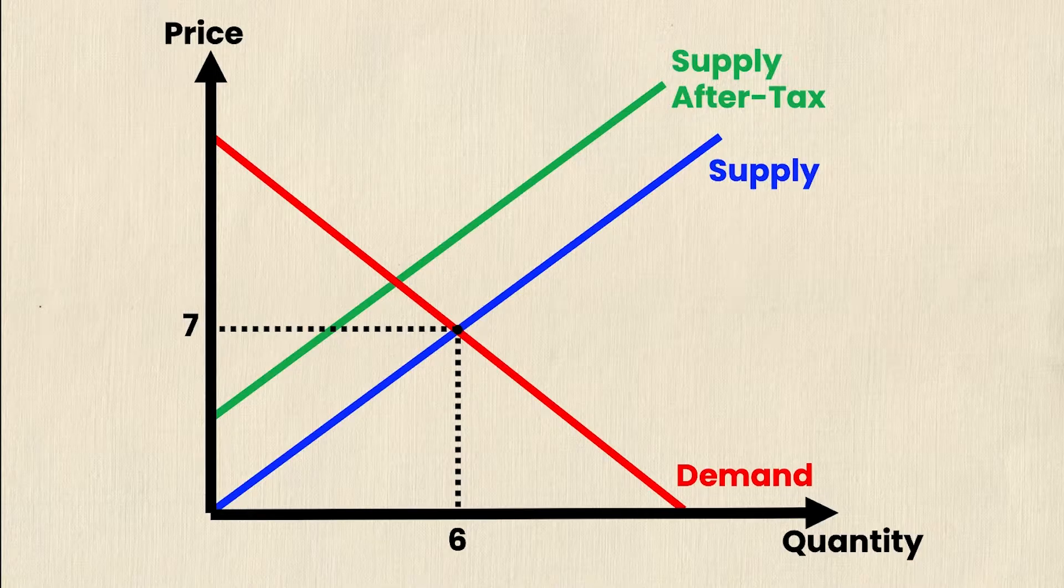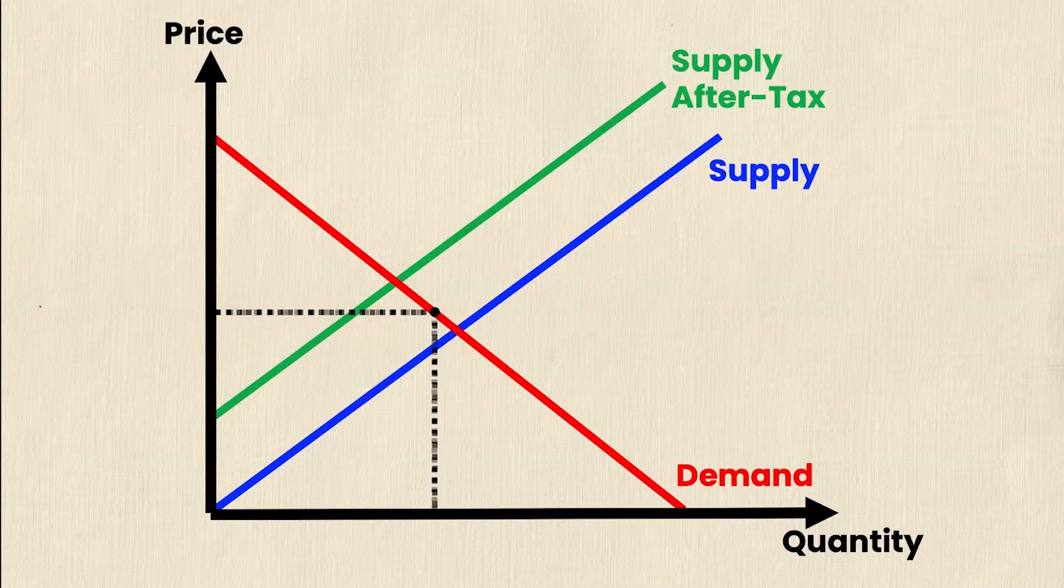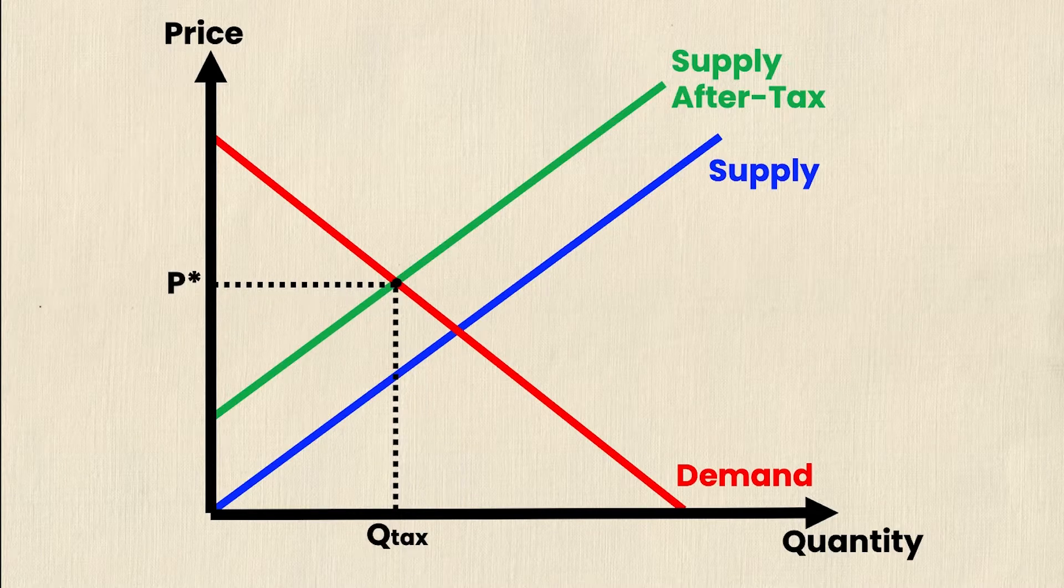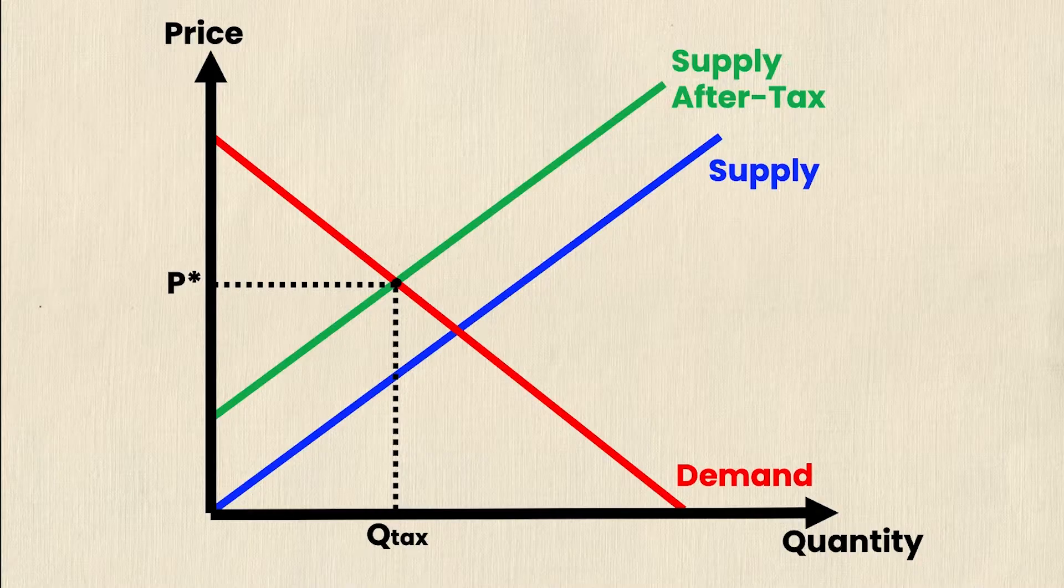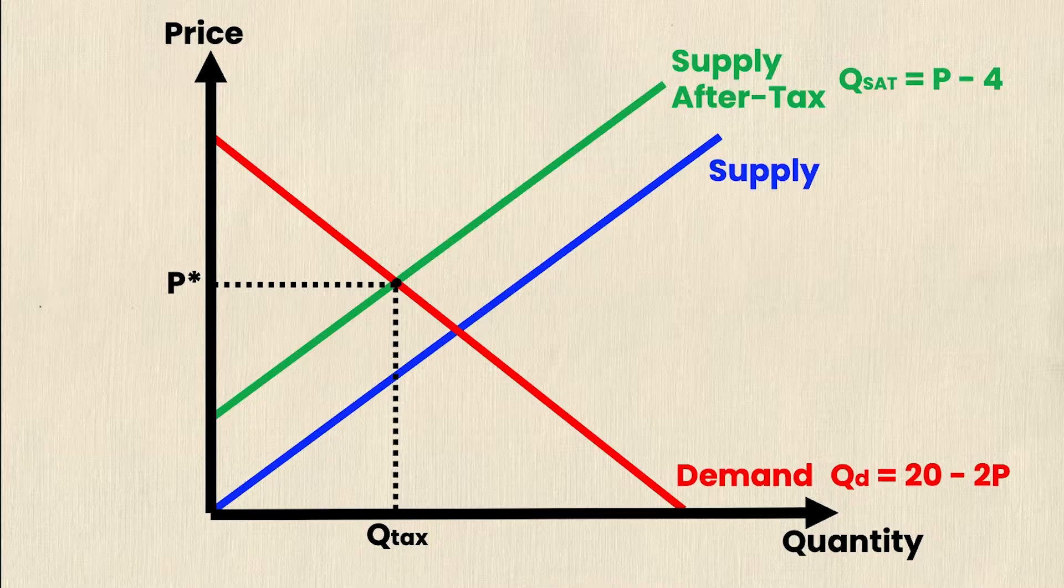Now that I have the supply curve after tax, I'm actually going to have a new equilibrium where the supply after tax intersects with the demand curve. And that's going to be at a new point up here, the new p star and q tax. If I have a new supply curve, then I obviously need the new supply equation, which is denoted q supply after tax or qsat, which is equal to p minus 4. Now the magnitude of this per unit tax in my example is $3.